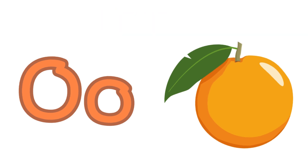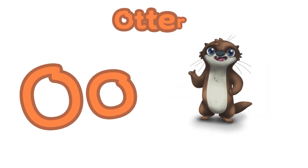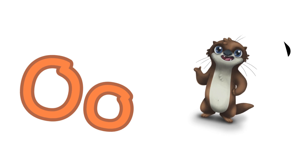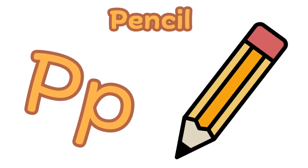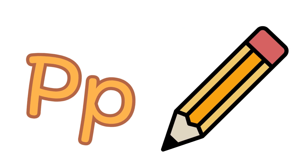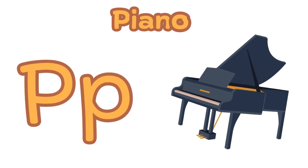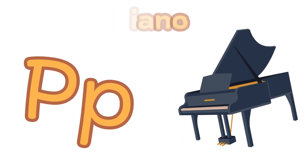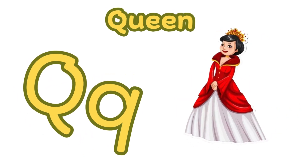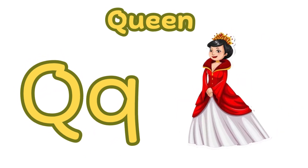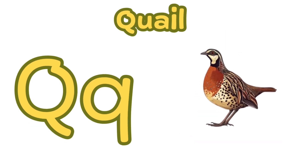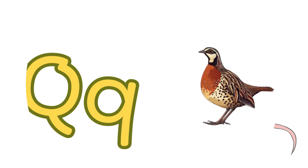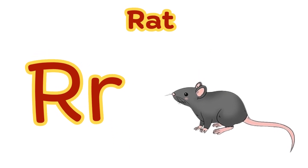O is for orange. O, o, o — orange. O is for otter. O, o, o — otter. P is for pencil. P, p, p — pencil. P is for piano. P, p, p — piano. Q is for queen.